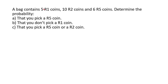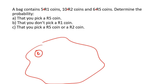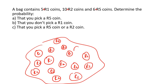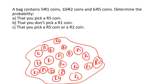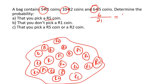A bag contains 5 one-rand coins, 10 two-rand coins, and 6 five-rand coins. Determine the probability that you'll pick a five-rand coin. The total number of coins is 5 plus 10 plus 6, which is 21 coins. For a five-rand coin, you don't put a 5 on top — you look at how many five-rand coins there are, which is 6. So that's 6 out of 21, which simplifies to 2 out of 7.